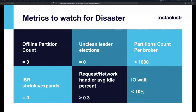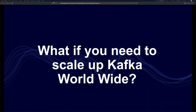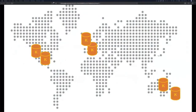That covers things that can go wrong and metrics to watch. Now let's talk about the other half of the presentation: scaling Kafka worldwide — the multi-region replication topic.